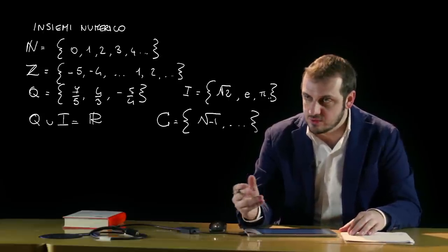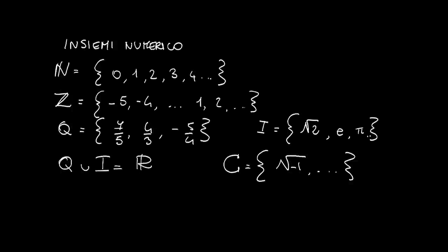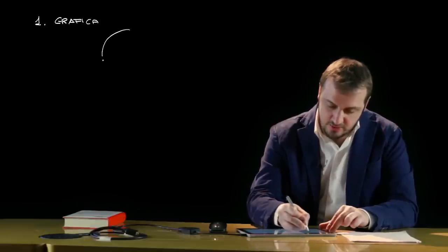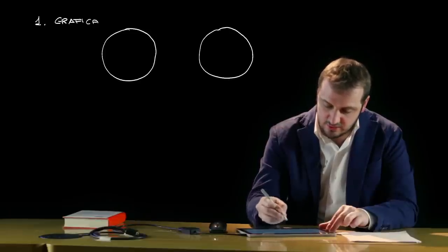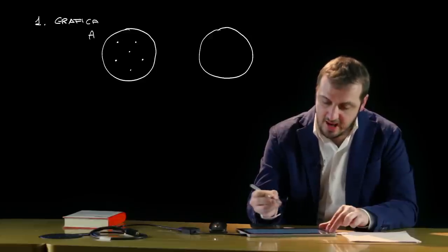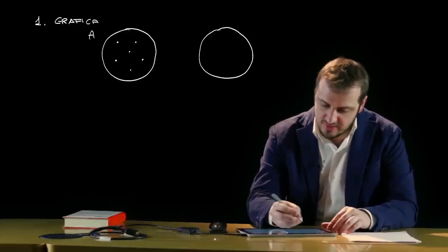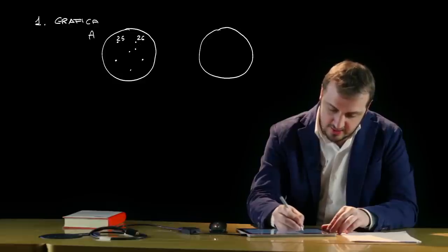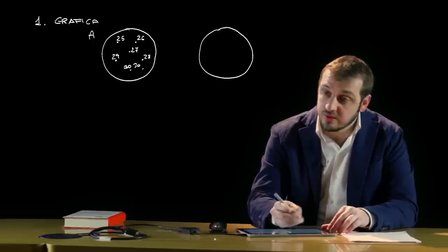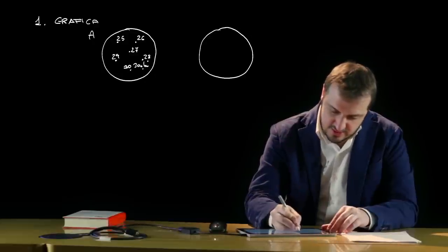Di questi aspetti ne parleremo nella lezione dedicata ai radicali. Gli insiemi possono essere rappresentati in tre principali modalità. La prima è una modalità grafica che utilizza i diagrammi di Eulero-Venn, che sono linee chiuse all'interno delle quali troviamo gli elementi. Per esempio, se l'insieme A è costituito dai voti di un esame universitario superiori al 24, avremo al suo interno 25, 26, 27, 28, 29, 30 — e anche il 30 con lode, che vi auguro di prendere nella vostra carriera universitaria.